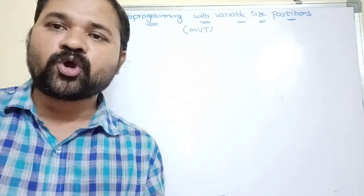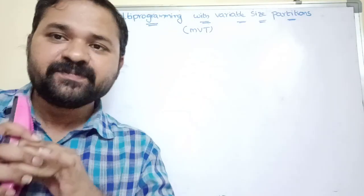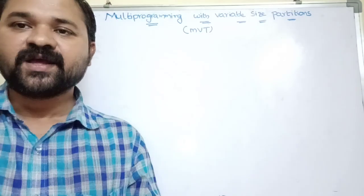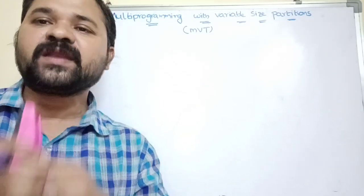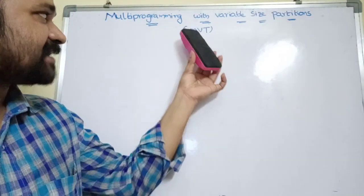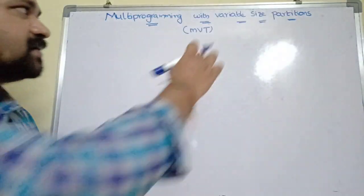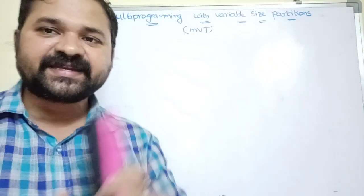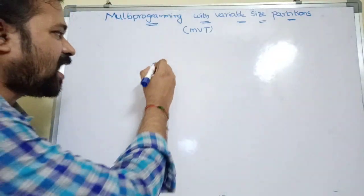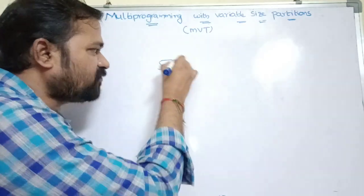This approach is mainly useful to overcome the drawbacks of multiprogramming with fixed size partitions. In MVT, M means multiprogramming — we can place multiple processes in main memory so the CPU executes all those processes efficiently. V stands for variable size partitions — the number of partitions depends upon the number of processes.